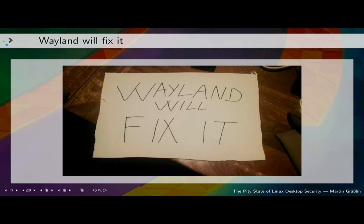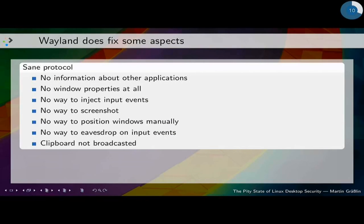And of course Wayland will fix it. Well, no, it won't. The protocol is sane and it fixes many aspects — especially the key logging aspect. We don't get window information, we don't know which windows are there, we cannot inject input events, we have no way to screenshot, we cannot position windows manually, and the clipboard is not broadcast to all applications. So that is already a very sane and secure protocol. But it doesn't really help us, as we will see later on.